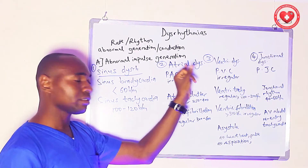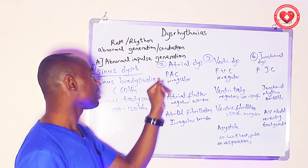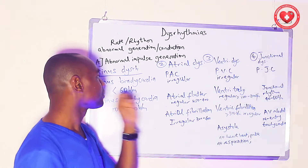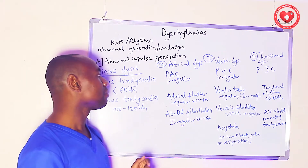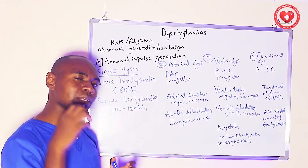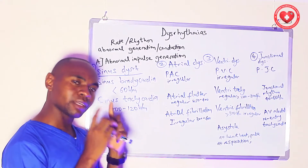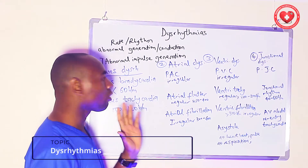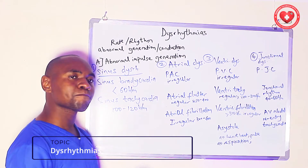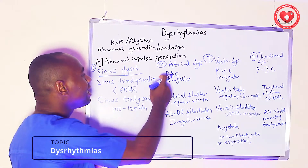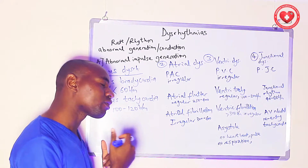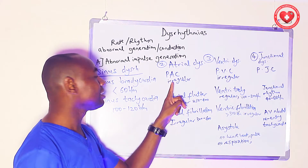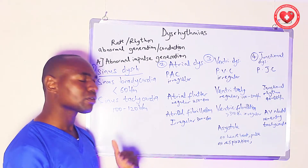The second category is atrial dysrhythmias — abnormal electrical impulses that originate from the atrium. There are three types: premature atrial complexes or contractions, atrial flutter, and atrial fibrillation. Premature atrial contractions mean the atrium releases its own impulse prematurely, before the normal heartbeat. It is always irregular in rhythm pattern.